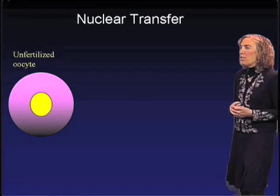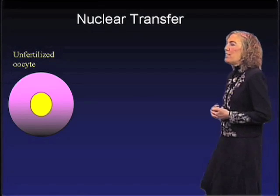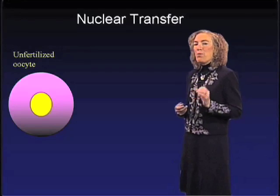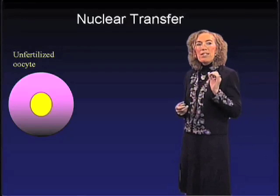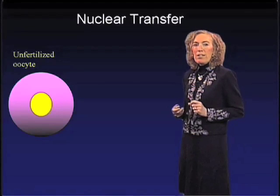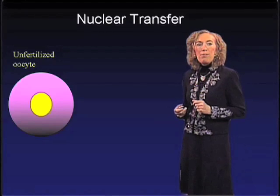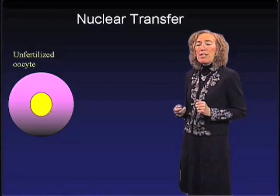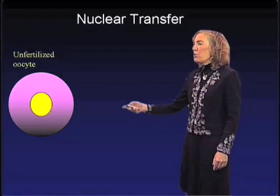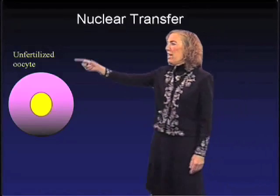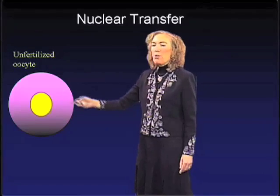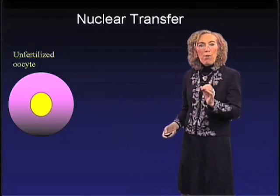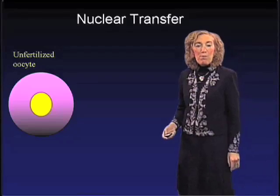Let me first describe the process of nuclear transfer. In this process, what we do is take an unfertilized oocyte — a single cell coming from a female. My laboratory does this type of technology; we work on mice to better understand the process.